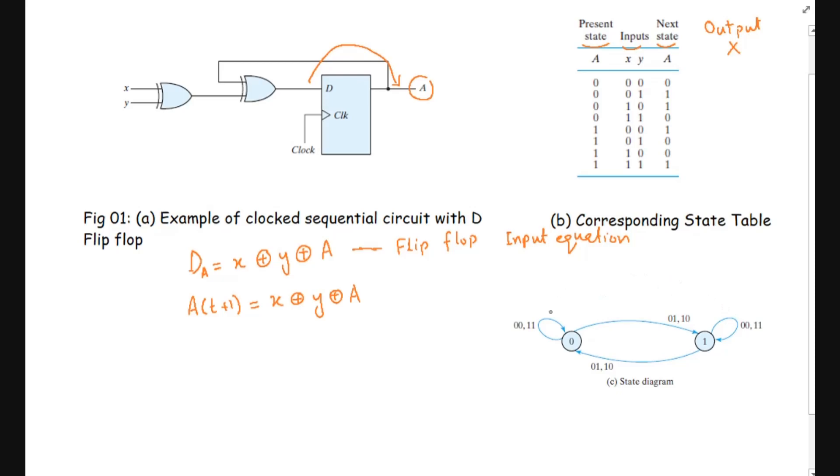Here in part C the state diagram for this example is given, where you have two states, state 0 and state 1. Here you can see from the state table that we have state 0 and state 1. If the inputs are 0,0 or 1,1 the state will remain same.